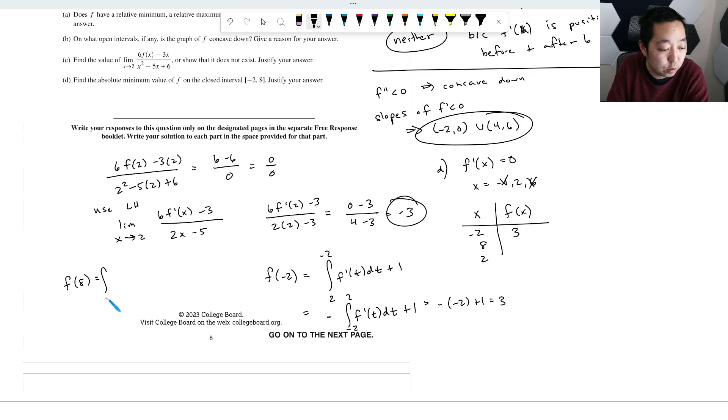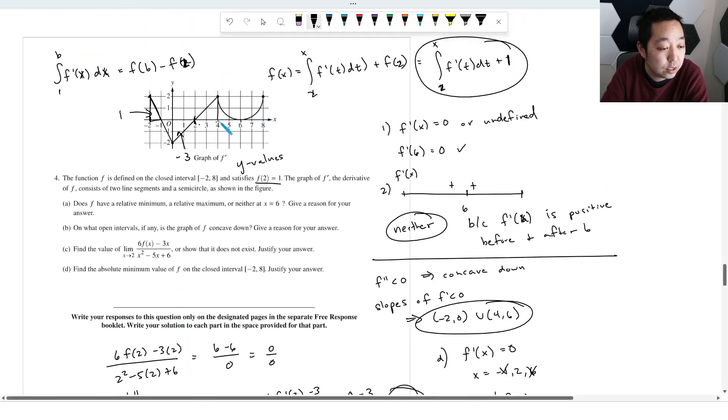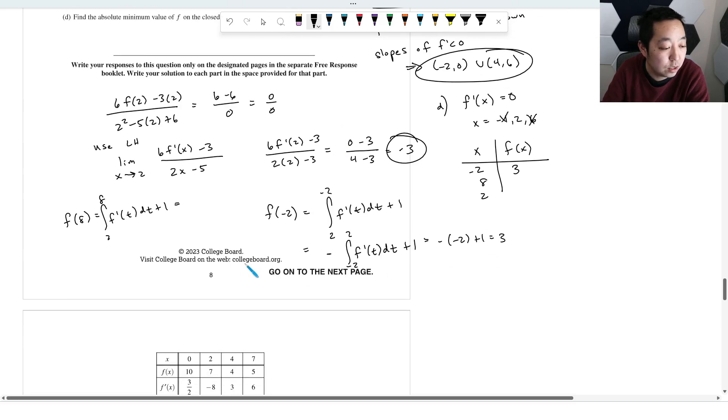Then we do f of 8, which would be the integral from 2 to 8 of f prime of t dt plus 1. So now we're going to integrate from 2 all the way to 8. So this triangle right here, this guy's going to have an area of, what is this area going to be? It's going to be a 2 by 2, 4, so it's 2. And then when I want to do this area from here to here, you got to do the area of this whole rectangle and then subtract the area of the circle. So the area in this region is I'm going to do the rectangle area. So the rectangle area, that's a 4, that's a 2, that's 8, minus the area of the circle. The area of the circle is half pi r squared, because it's half a circle. What's the radius of the circle? It's 2. So this is going to be 8 minus 2 pi. So that area is 8 minus 2 pi. So this is going to be 8 minus 2 pi plus 1, that's going to be 9 minus 2 pi.